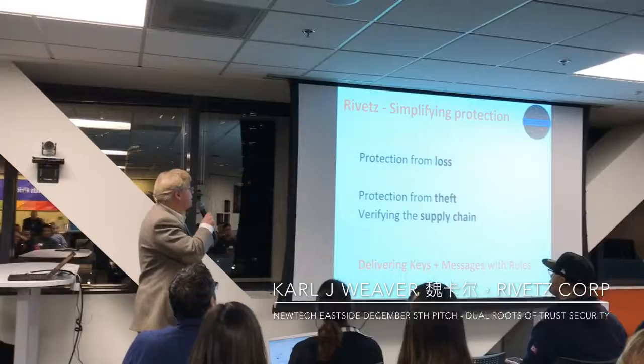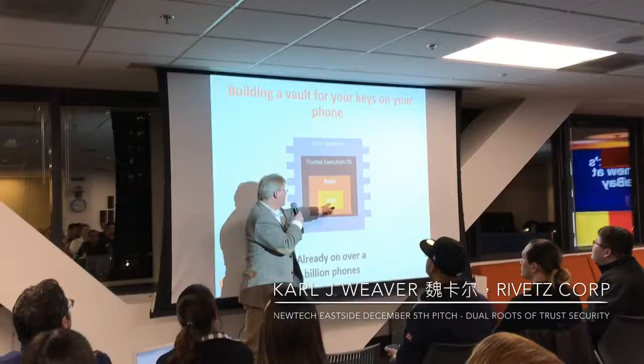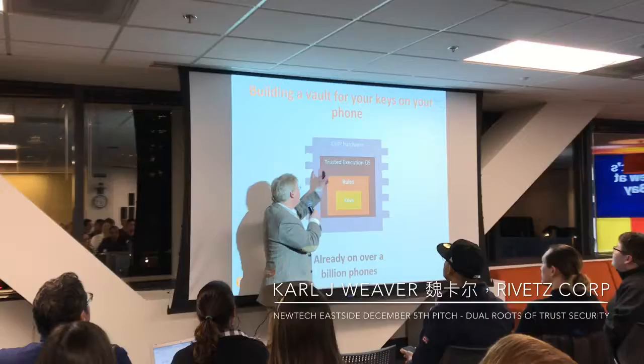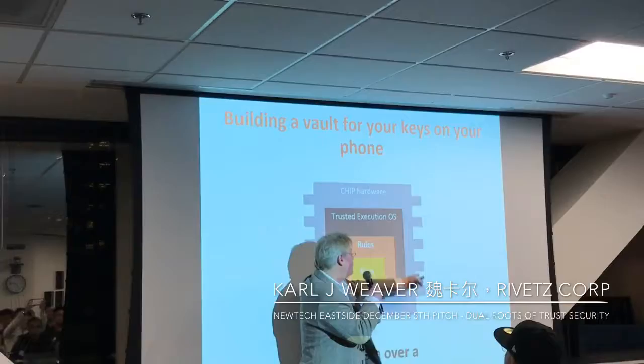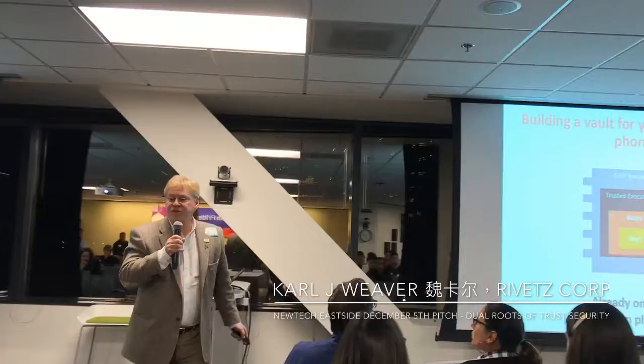You have keys that you need to protect — in this case, crypto keys using a hash. Rules are applied to those keys. The Trusted Execution Environment, which is a security OS only used for ARM TrustZone, is part of that ecosystem in the chip. It's all based on ARM core technology. ARM is the largest IP company for chips on the planet. But they don't make chips — Qualcomm does.